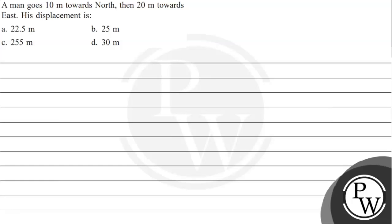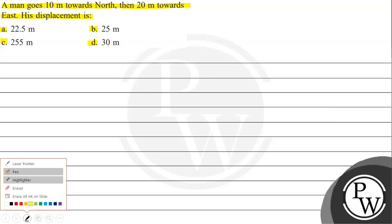Hello, let's read the given question. The question says a man goes 10 meters towards north, then 20 meters towards east. His displacement is: option a) 22.5 meter, option b) 25 meter, option c) 255 meter, option d) 30 meter.